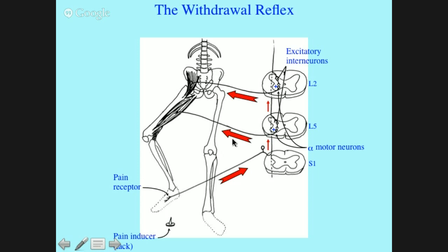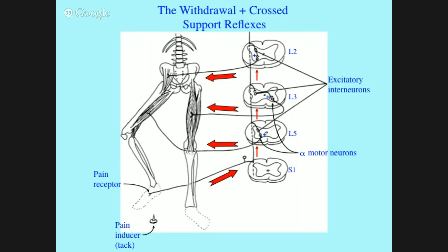A key point is the withdrawal response tends to be both a very global and a prolonged response. You don't want it to be phasic — you don't want to lift your foot off the tack and then have the muscle relax so your foot falls right back on it. In individuals with injuries that disconnect the spinal cord from the brain, these reflexes get very exaggerated over time in the chronic condition. You can get a fairly massive, global withdrawal response triggered by cutaneous inputs.